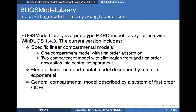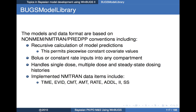To the extent possible, the models and data format were made consistent with NONMEM, NMTRAN, and PREDPP conventions. That includes, for example, the fact that calculations of model predictions are done recursively — meaning whenever you're going to calculate predicted values for a particular time, it starts the calculations at the immediately preceding observation time. That allows you to have piecewise constant parameter values, where parameters can be time-variable as long as they can be described as a step function.